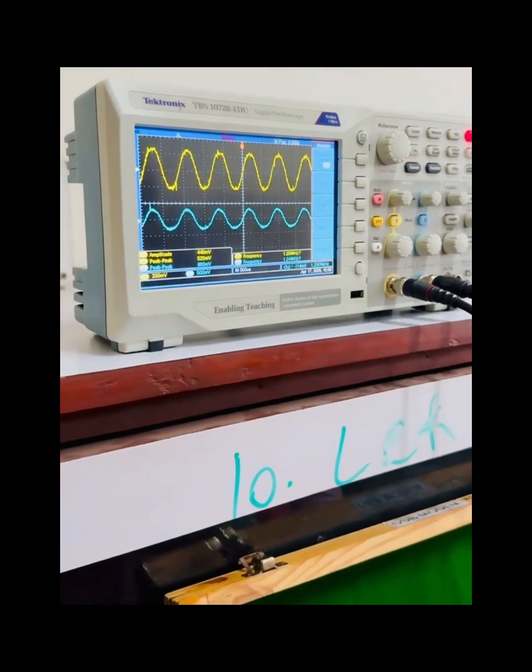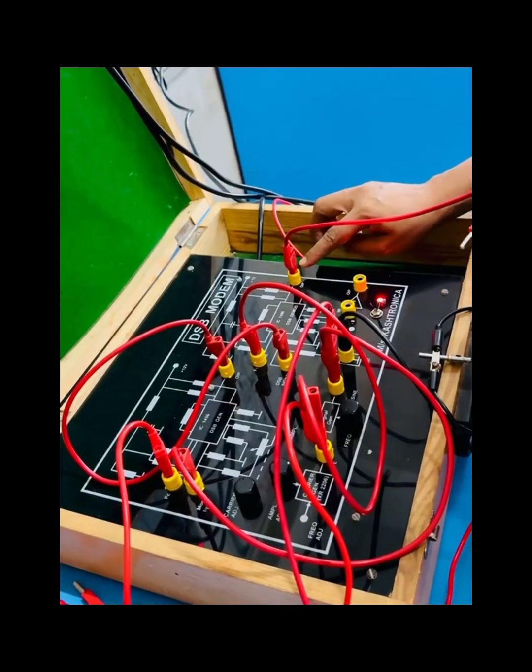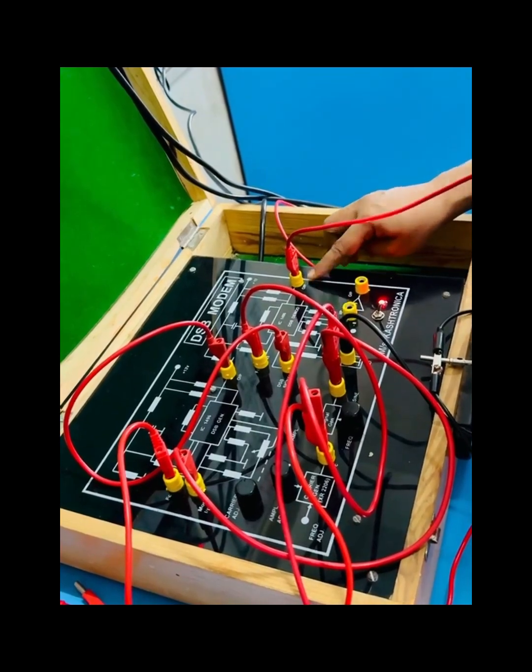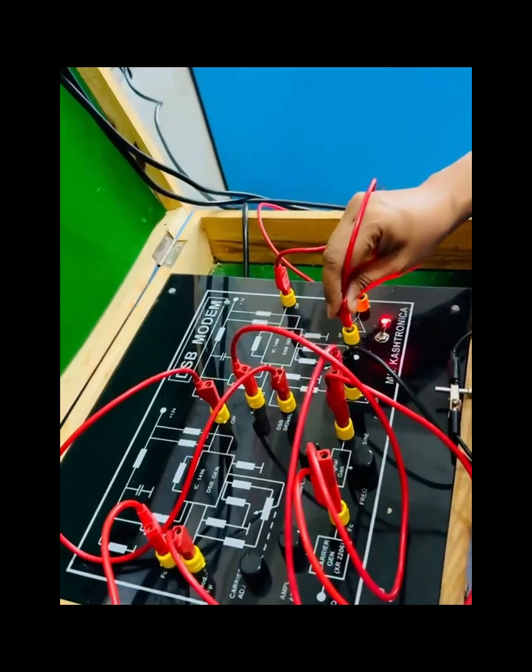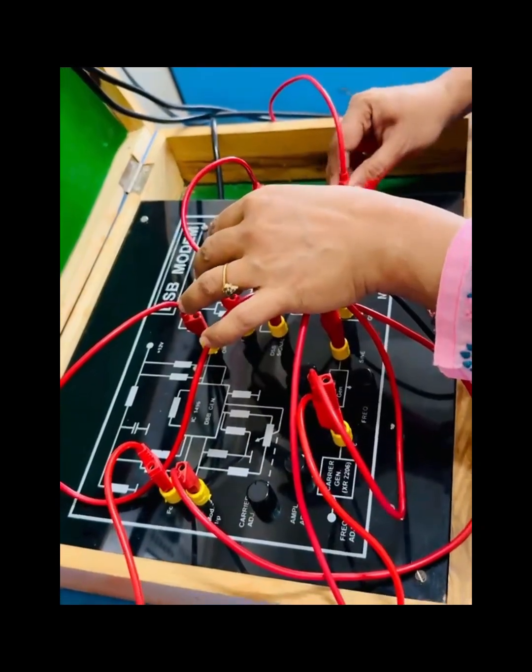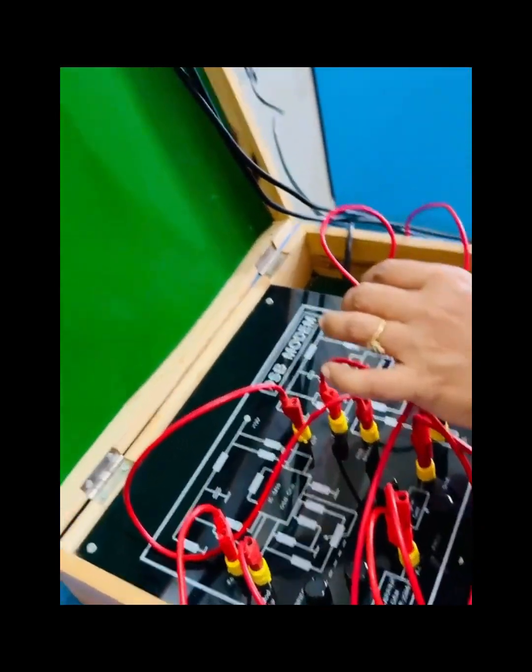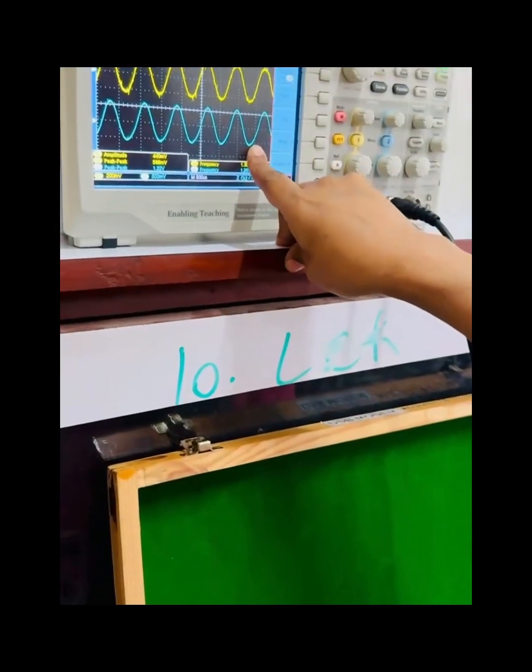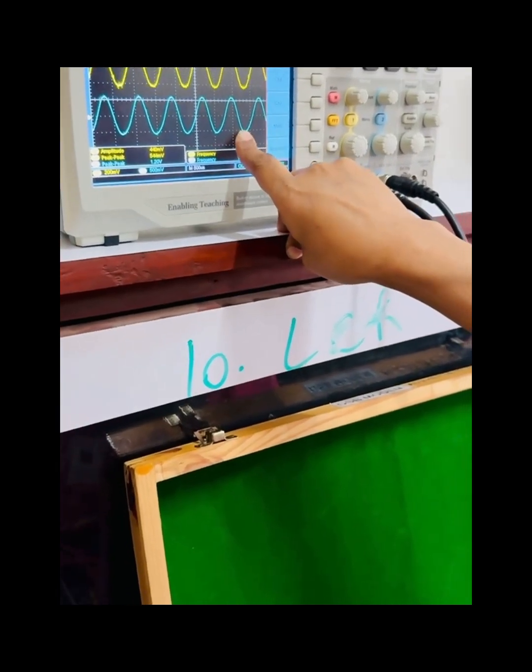So for that we will connect the output of DSB demodulator to the input of low pass filter, and the output of low pass filter can be observed which is a smoother version of the previously demodulated signal.